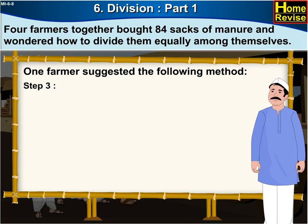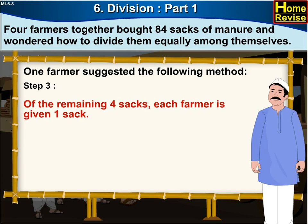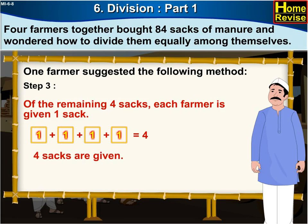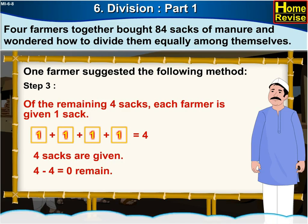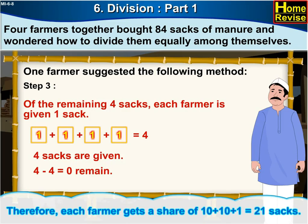Step 3. Of the remaining four sacks, each farmer is given one sack. 1 plus 1 plus 1 plus 1 is equal to 4, so four sacks are given. 4 minus 4 is equal to 0, which means no sacks are left over. Therefore, each farmer gets a share of 10 plus 10 plus 1, which is equal to 21 sacks.